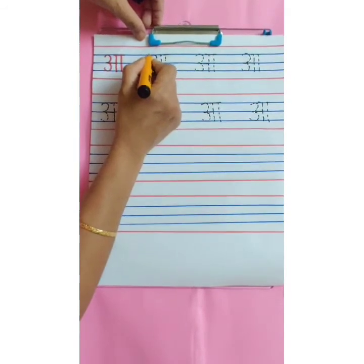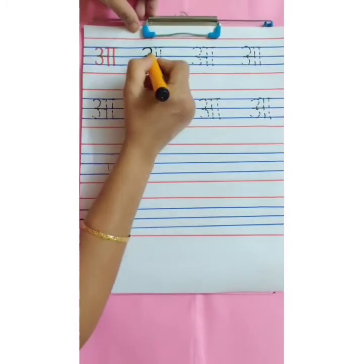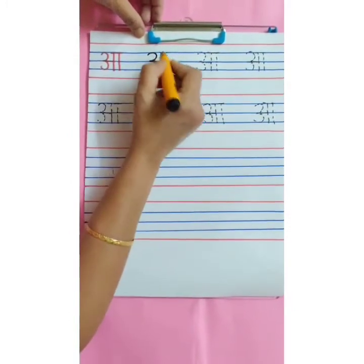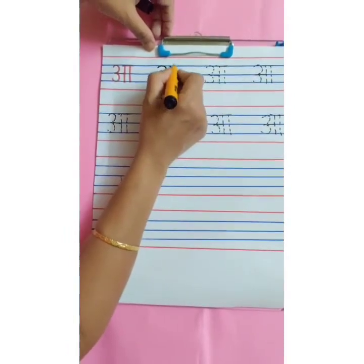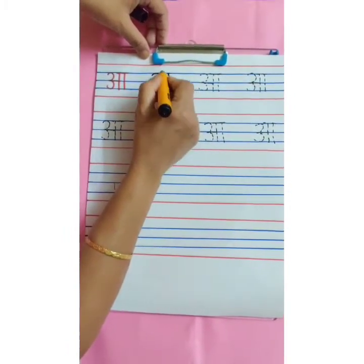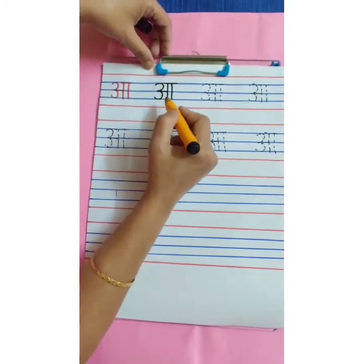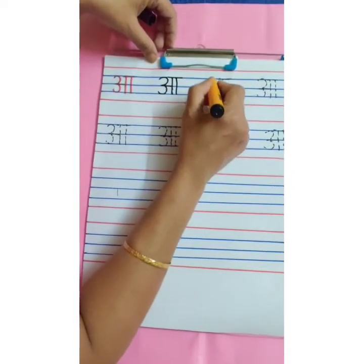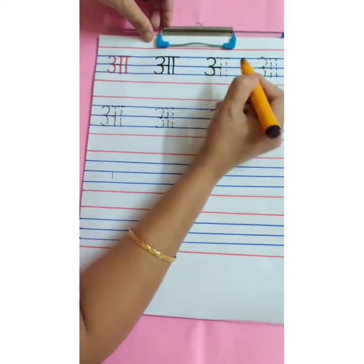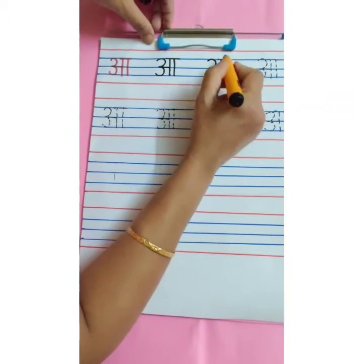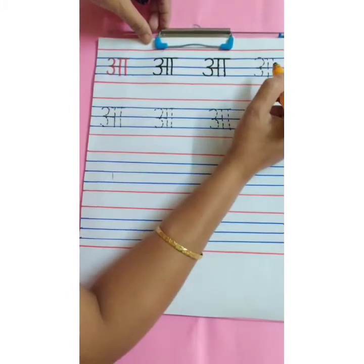A. Start with the first blue line. Write number 3. Like this — small slipping line, then standing line, this is A, and one more standing line, and small slipping line overhead. This is A. One more time: write number 3 within 3 blue lines — sleeping line, standing line, one more standing line, and small slipping line overhead. A.